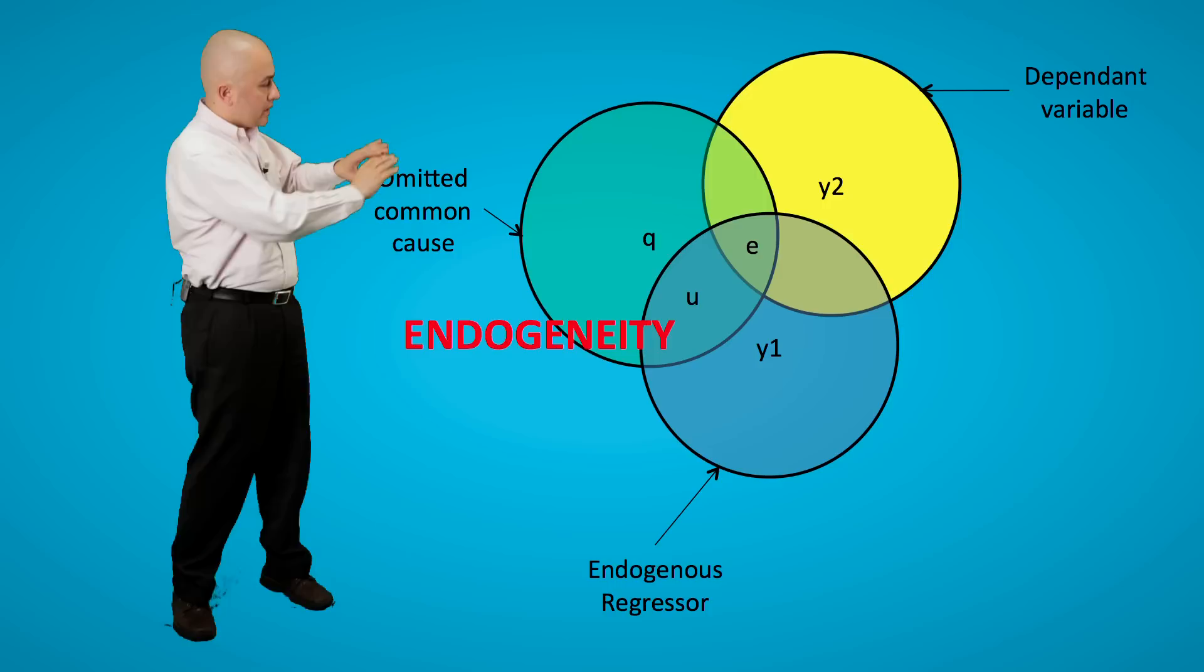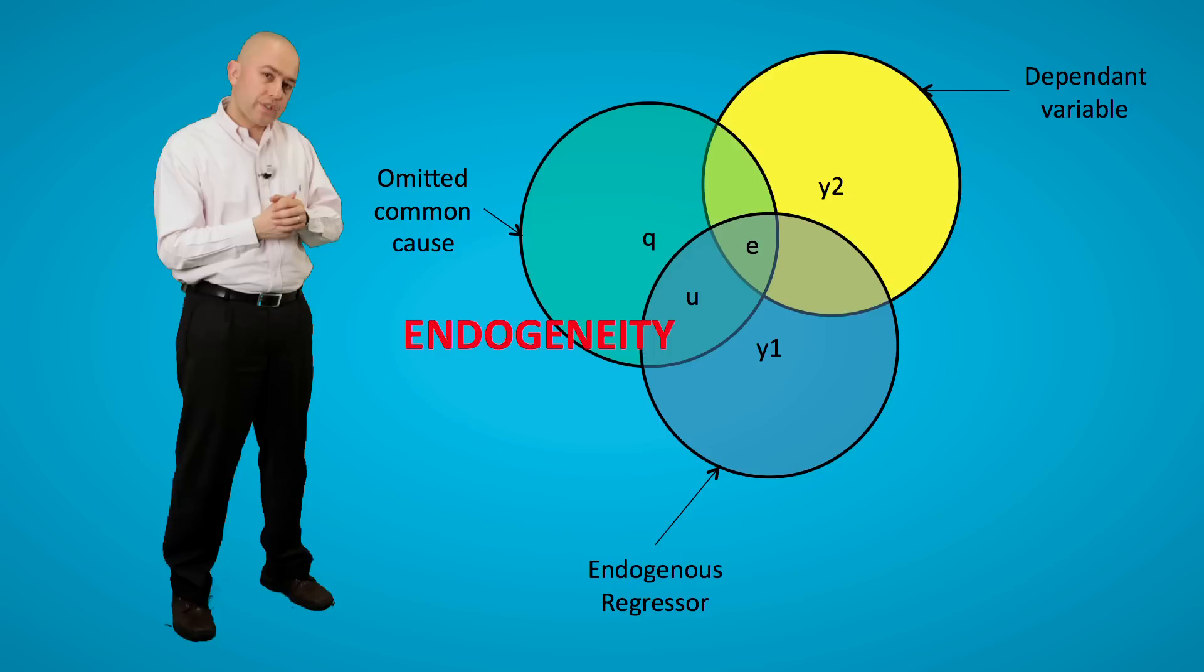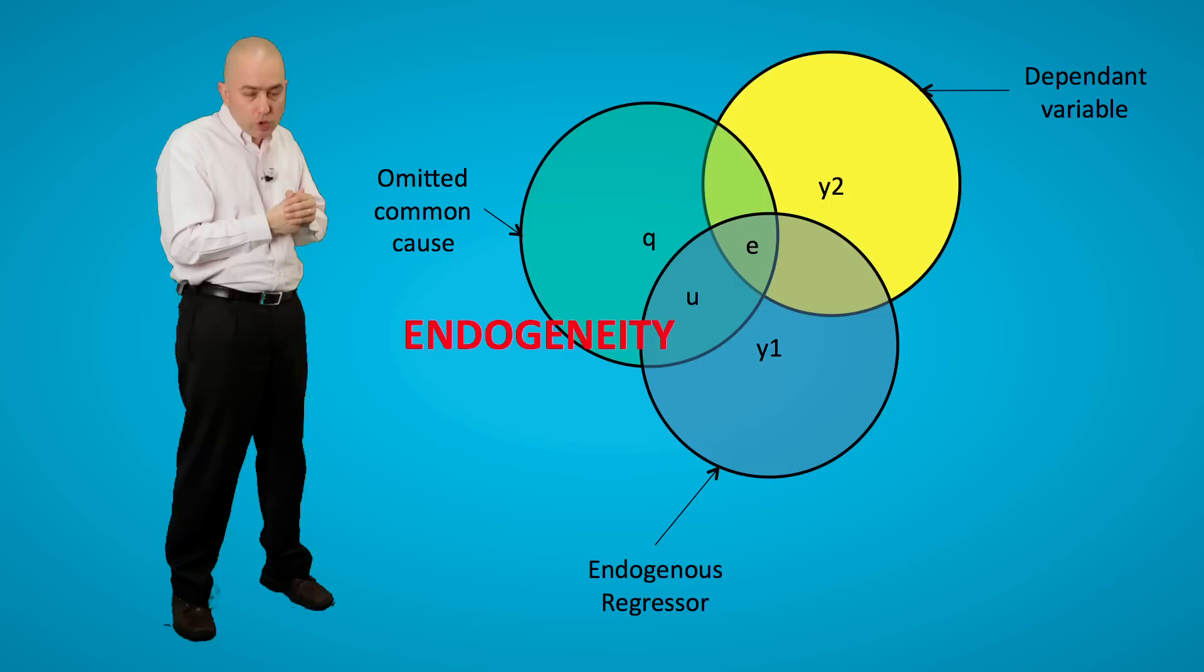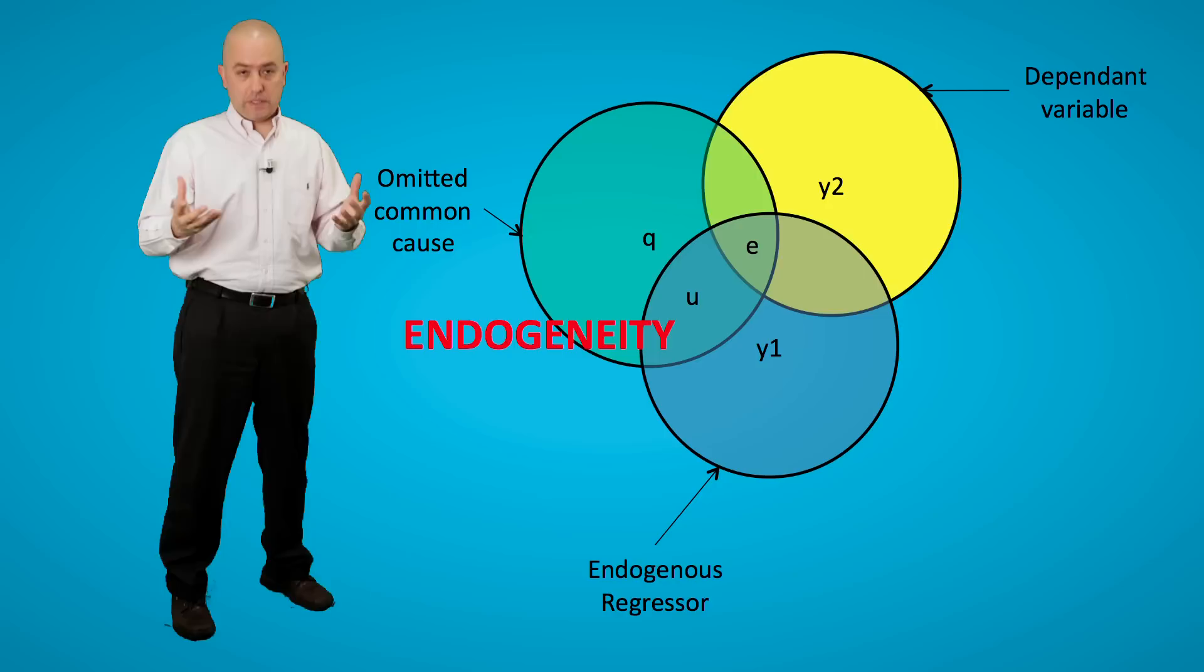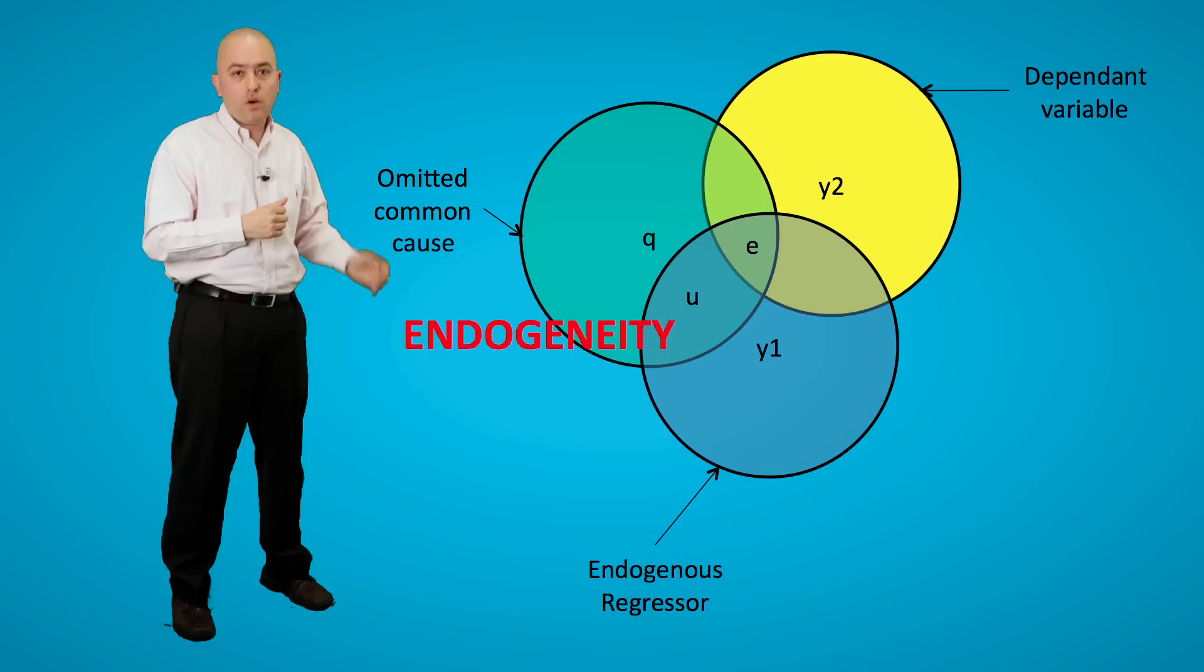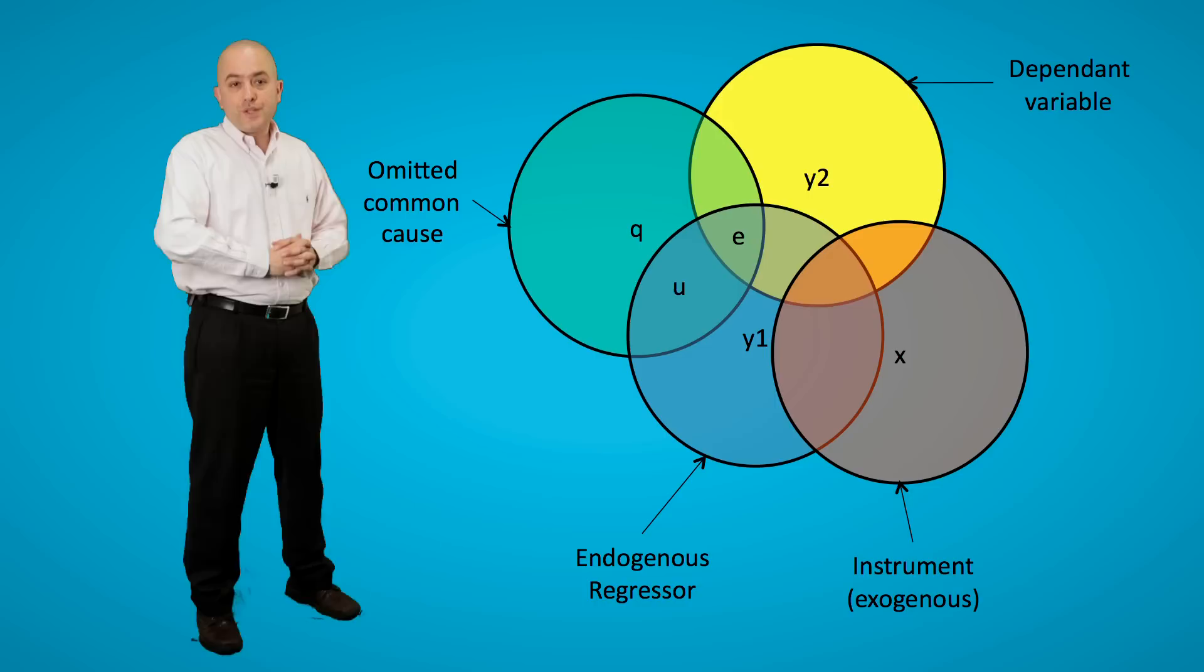Now, if we just estimate this relationship between Y1 and Y2, as you will see, the overlapping area consists of a true component, but it also consists of an error component, and that is where the three circles overlap. That portion of the variance in the yellow circle is going to be incorrectly estimated if we use what is called the normal OLS, or ordinary least squares estimator, or maybe even maximum likelihood. It does not matter which estimator we use, but if we do not acknowledge the correct causal structure and find an instrument that is exogenous to the system of variables, we cannot identify the causal effect of Y1 on Y2.